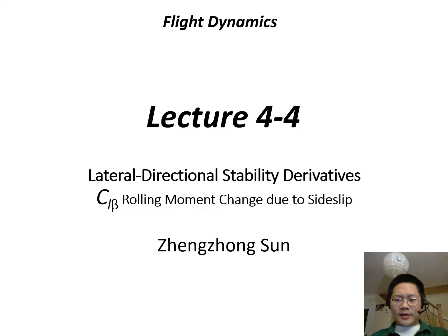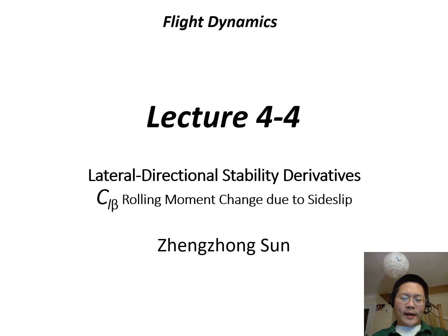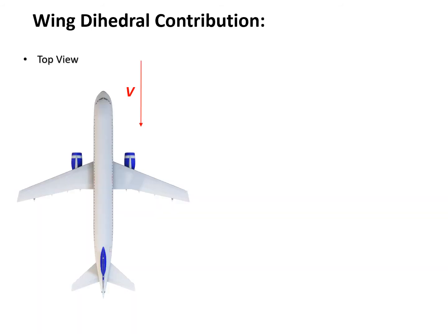In this mini lecture, we will continue with the lateral directional stability derivative, and we will be looking at Cl_beta, the rolling moment change due to sideslip. There will be two contributions to Cl_beta, and the first one is the wing dihedral contribution.